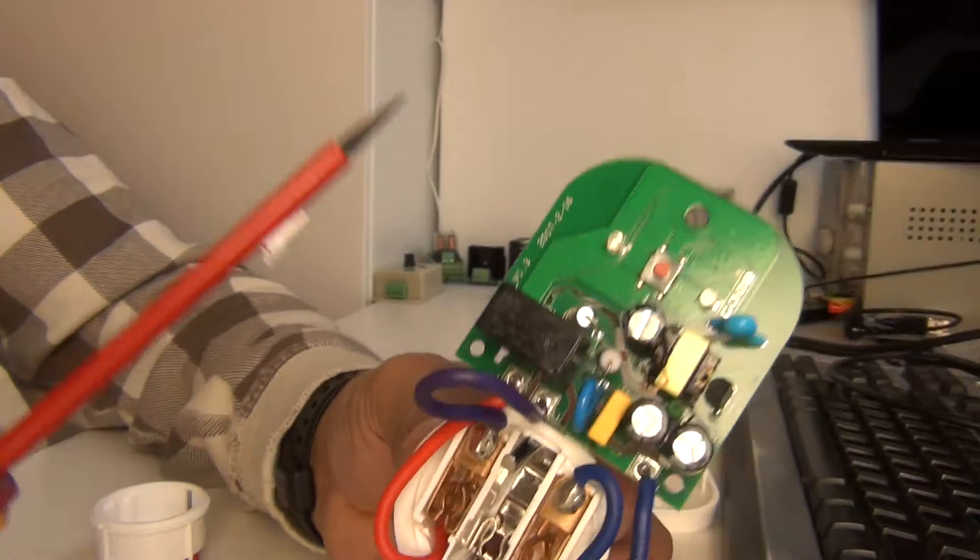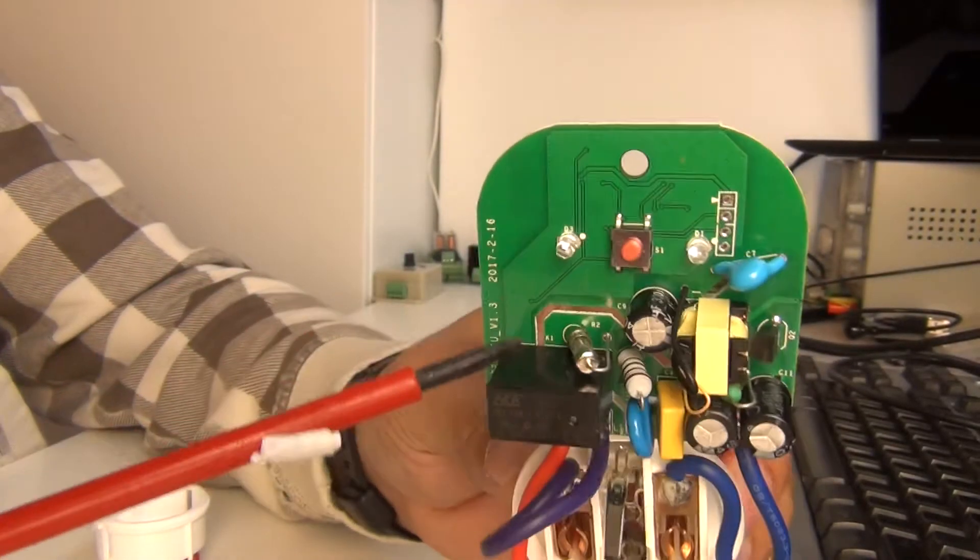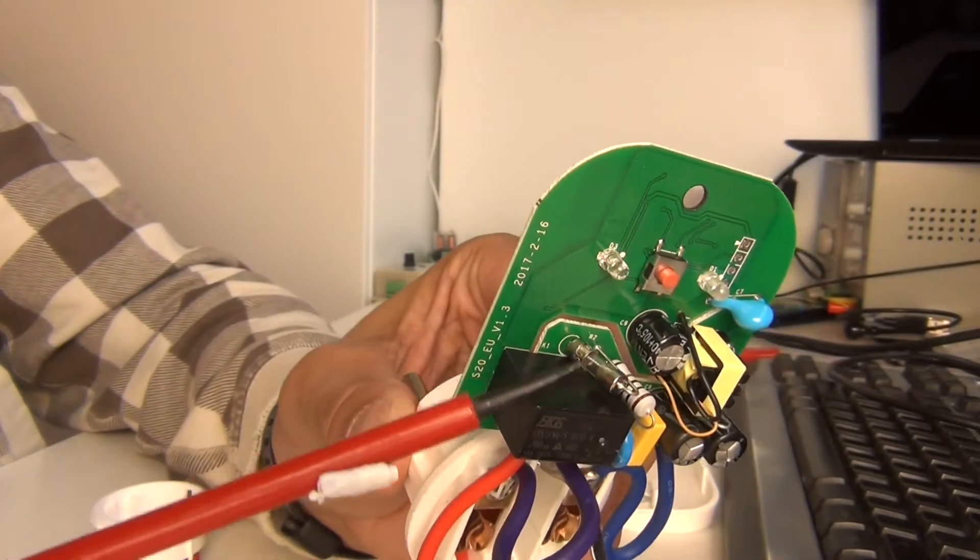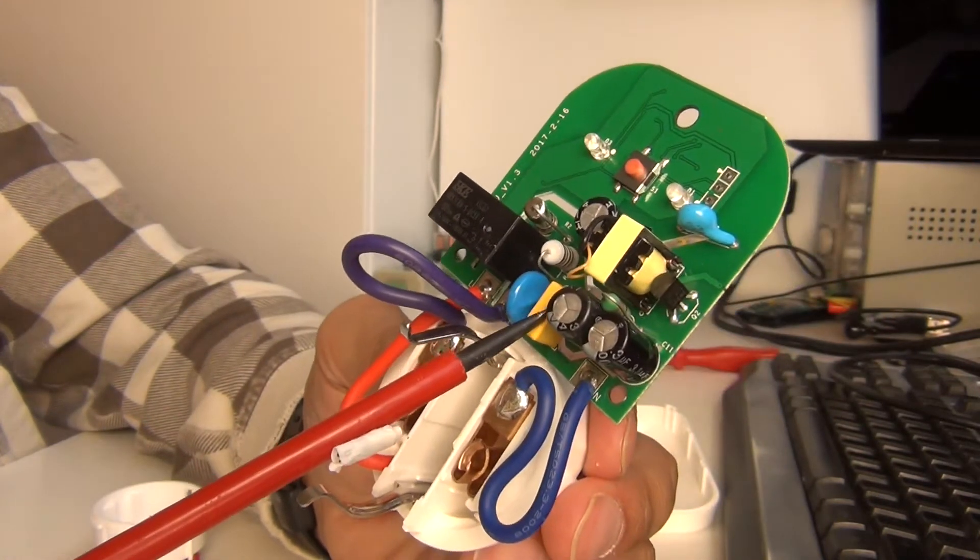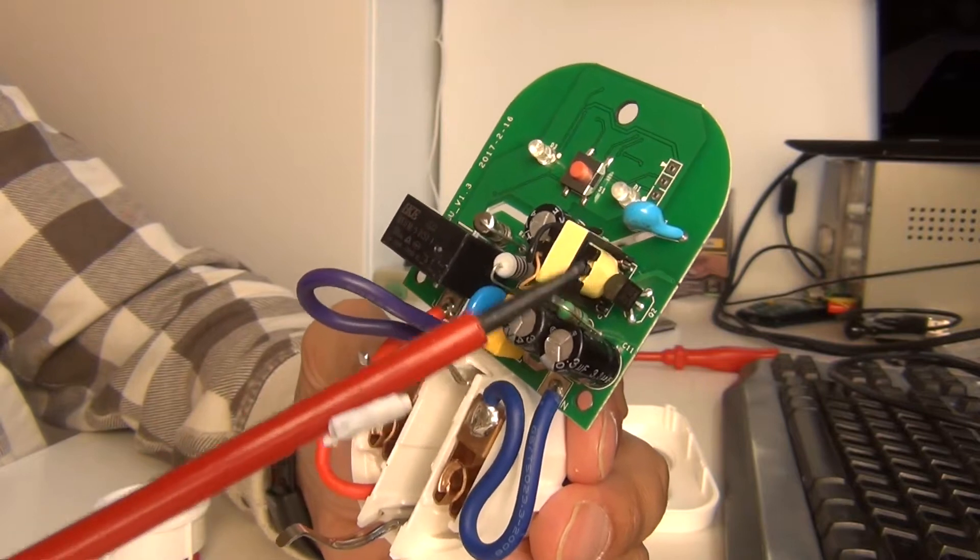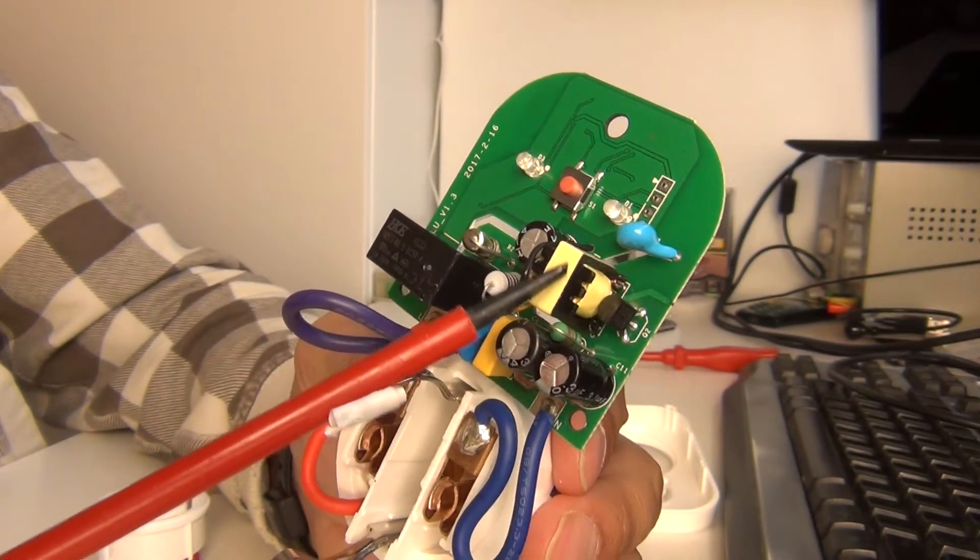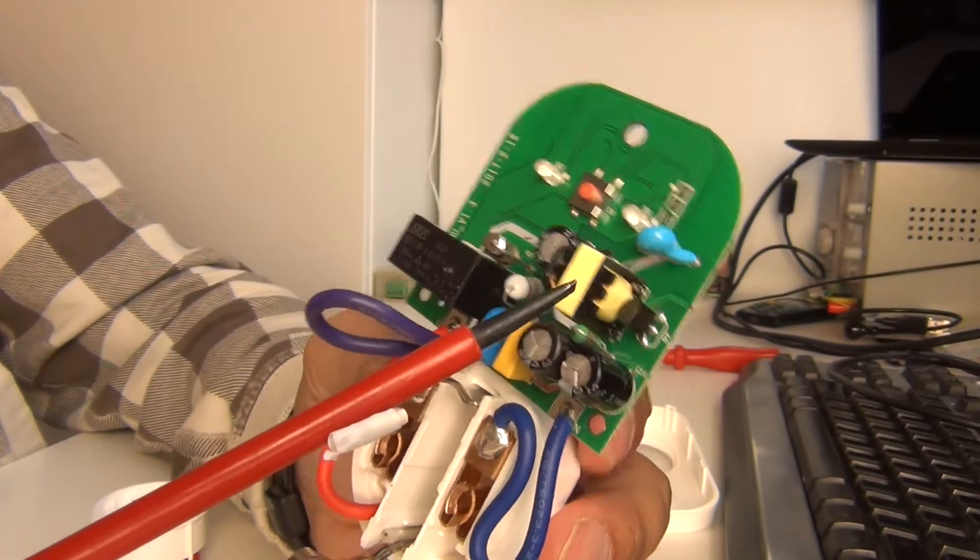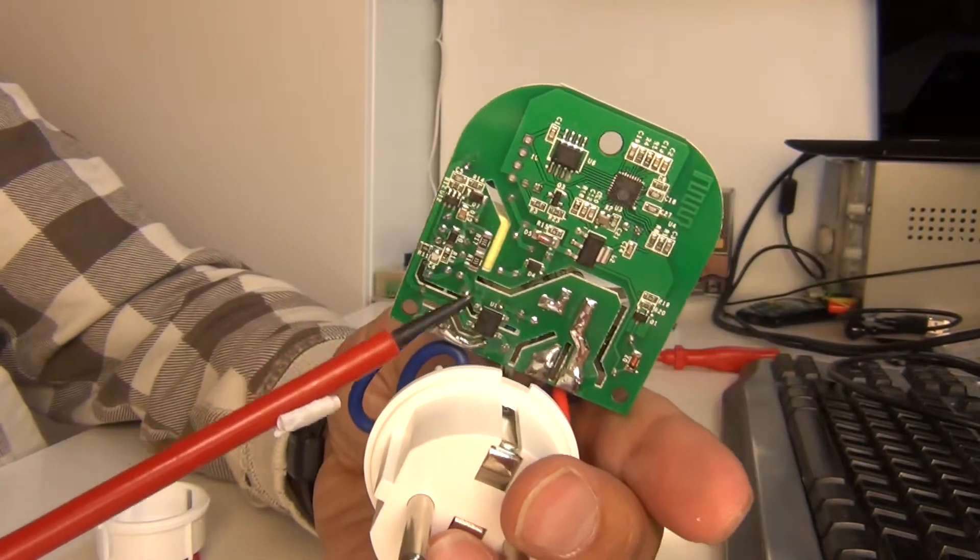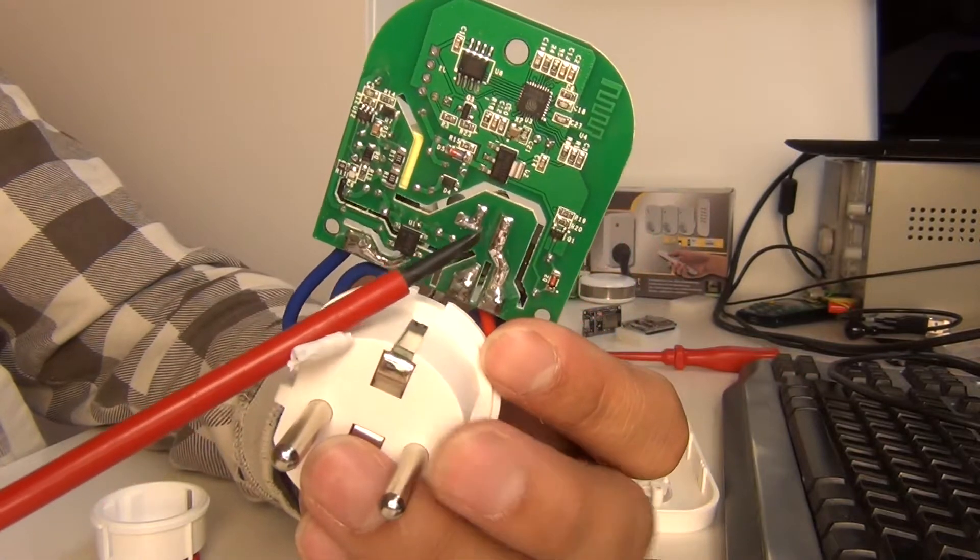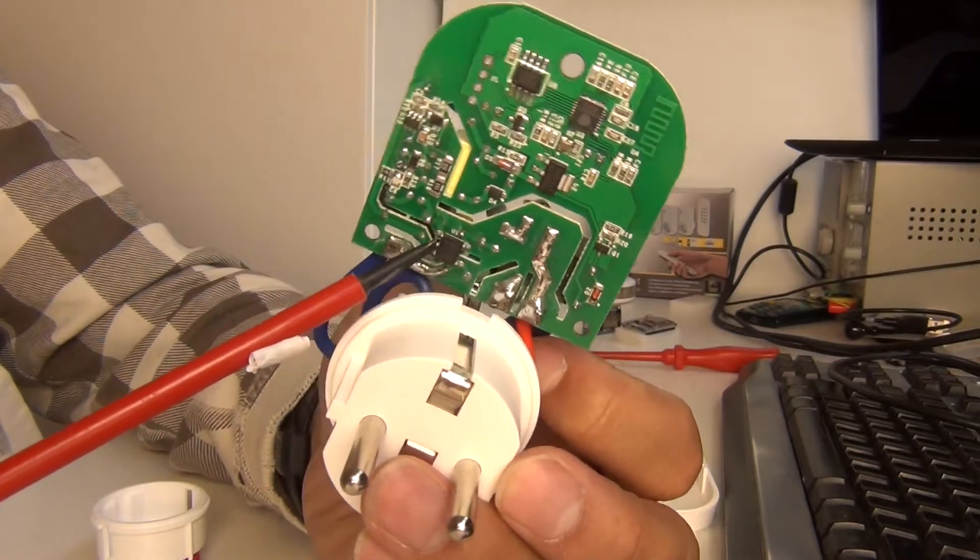Over here you can see that there is a fuse integrated in this circuit and there are some capacitors over here and there is even a coil over there. What this means is that there is a switching mode power supply on the back. Here comes the AC part and then it goes to the rectifier which brings it to around 300-400 volts DC.